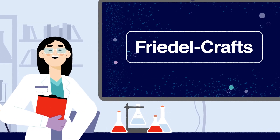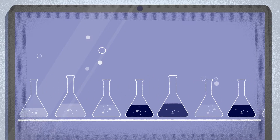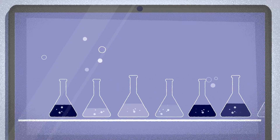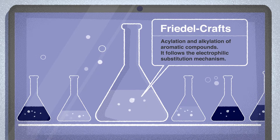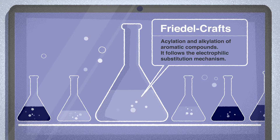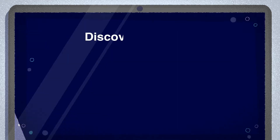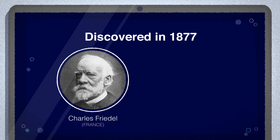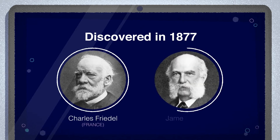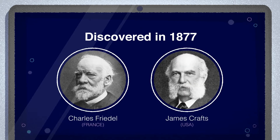First, a few facts. This reaction is categorized as an acylation and alkylation of aromatic compounds, and it follows the electrophilic substitution mechanism. It was discovered in 1877 by French chemist Charles Friedel and American chemist James Crafts, and has been a staple of organic synthesis ever since.